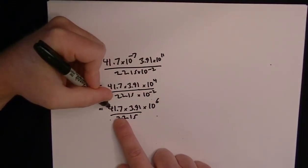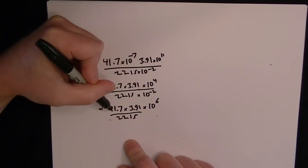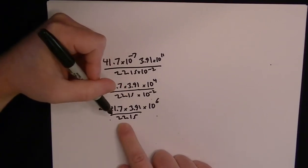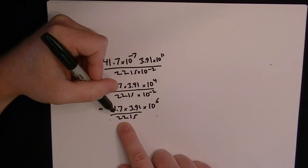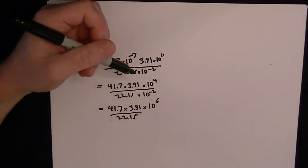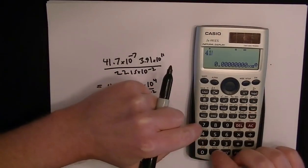Now, you can use the calculator, but you can also figure this one out by guessing. We've got about 40 multiplied by about 4, which is 160, divided by about 20. So that should give us about 8. So we would have an answer of 8 times 10 to the 6. We'll plug it into the calculator to make sure we get the exact answer.